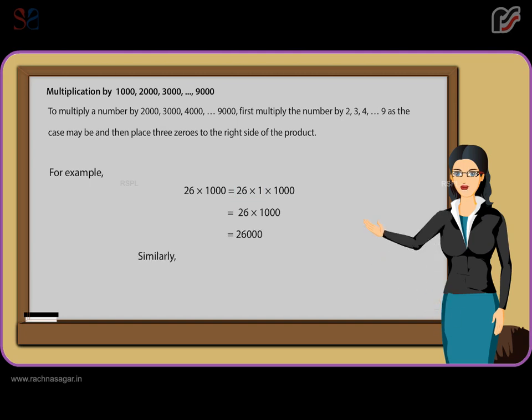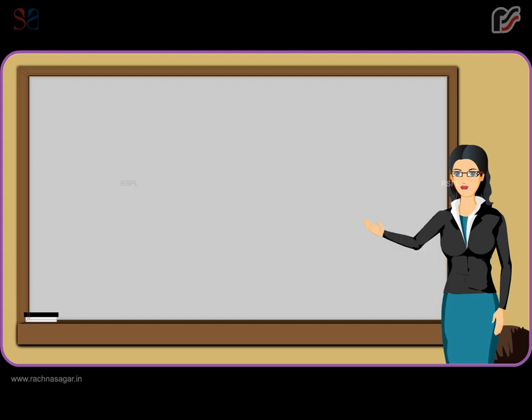Similarly, 65 x 4000 is equal to 65 x 4 x 1000 is equal to 260 x 1000 is equal to 260,000.